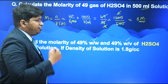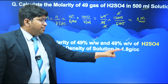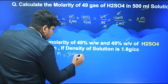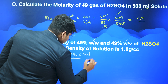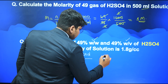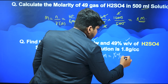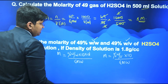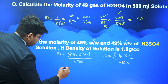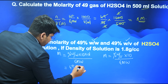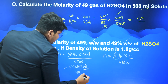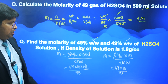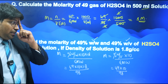Another important relationship: for 49% weight by weight H2SO4 with density 1.8 g/cc, molarity = (percentage w/w × 10 × density) / molar mass. For weight by volume, molarity = (percentage w/v × 10) / molar mass — note that for w/w you multiply by density, while for w/v there is no density multiplication. Direct substitution: (49 × 10 × 1.8) / 98.